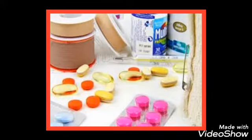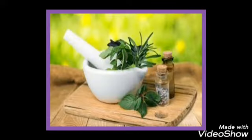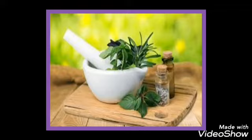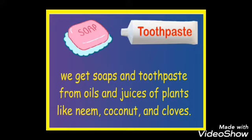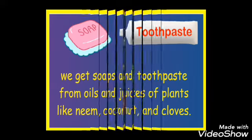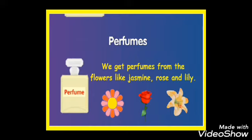Children, when you fall sick, doctor uncle gives you medicines and you feel better. Medicines like Pudinara, Odomos, and cough syrups are prepared from plants. Tulsi, neem, mint, and turmeric are medicinal plants. We use them to make decoction — decoction means kadha. We use oils and juices of plants like neem, rose, and lime to make soaps and toothpaste. We also make lovely perfumes from flowers like rose, jasmine, lily and champa.